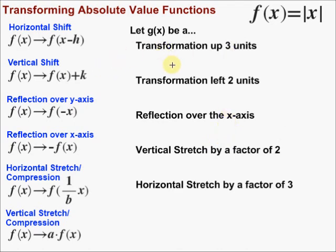Up three units is a vertical change, so I grab the vertical shift recipe. g(x) is going to be equal to f(x) plus k, where k is that vertical shift. Remember that when we go up, that's a positive movement; when we go down, it's negative. So since we're going up, it's going to be plus three — f(x) plus three.